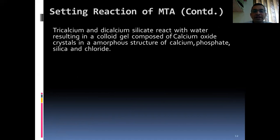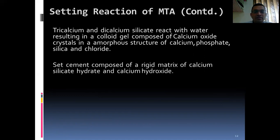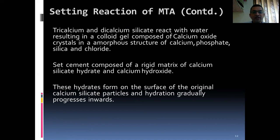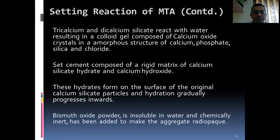Tricalcium and dicalcium silicate react with water resulting in a colloidal gel composed of calcium oxide crystals, an amorphous structure of calcium phosphate, silica, and chloride. Set cement is composed of a rigid matrix of calcium silicate hydrate and calcium hydroxide. These hydrates form on the surface of the original calcium silicate particles and hydration gradually progresses. Bismuth oxide powder is insoluble in water and chemically inert; it has been added to make the aggregate radiopaque.